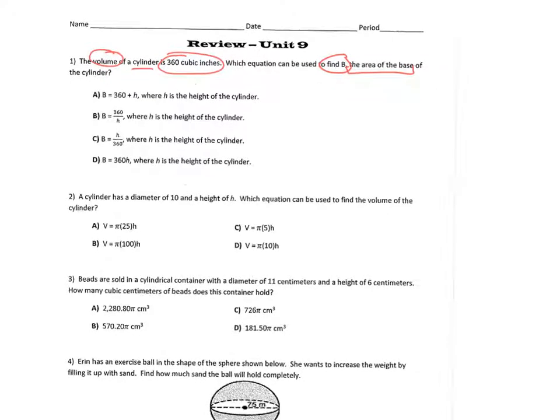Volume of a cylinder is big B times H. Yeah, so capital B times H, which is area of the base times height.